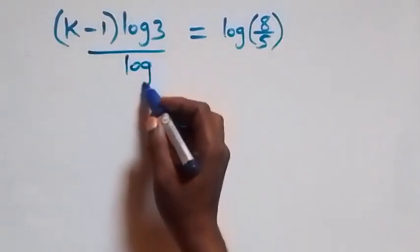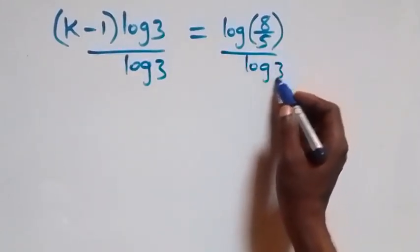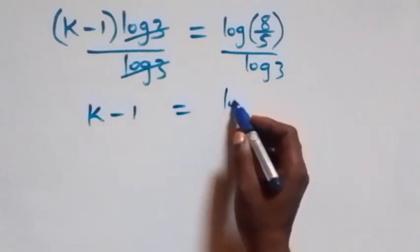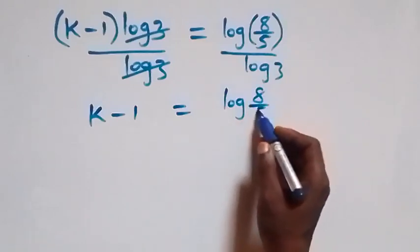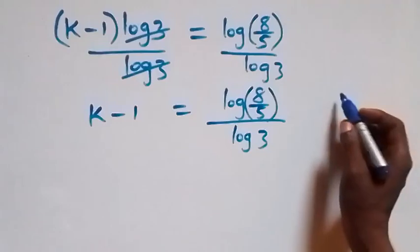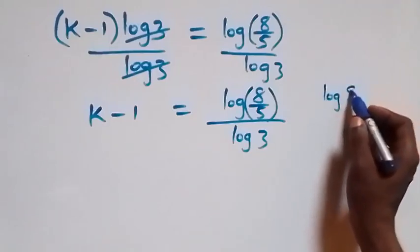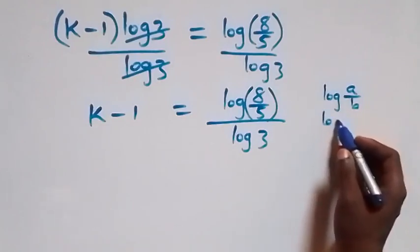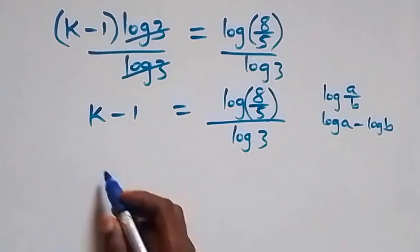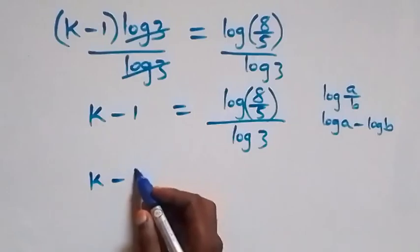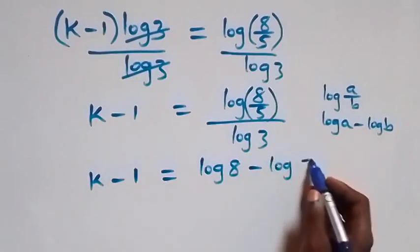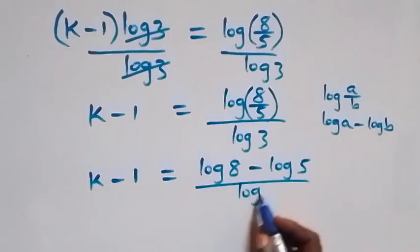Next step, we divide both sides by log 3, so log 3 cancels each other and we are left with k minus 1 equals to log 8 over 5 divided by log 3. Then applying the log quotient rule — log a over b can be written as log a minus log b — this becomes k minus 1 equals to log 8 minus log 5, all over log 3.